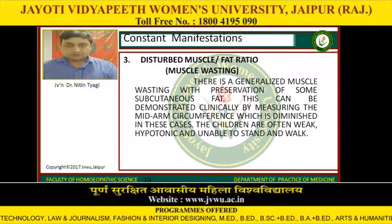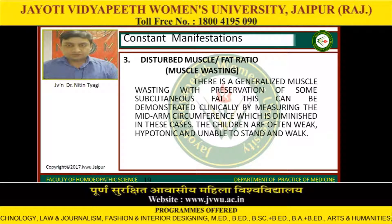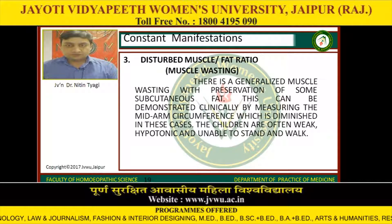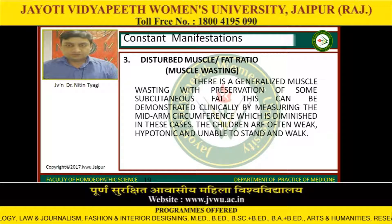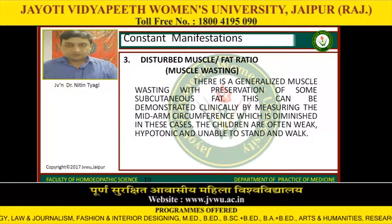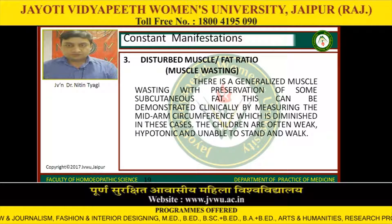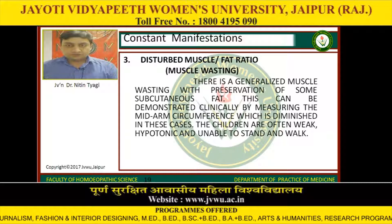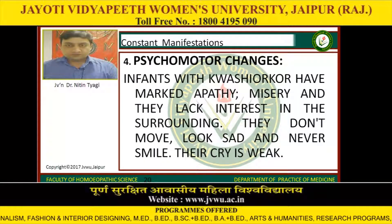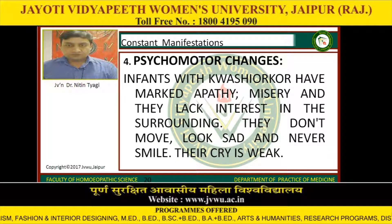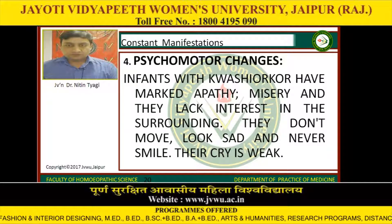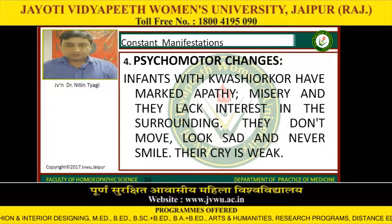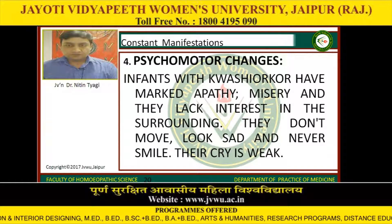The third constant manifestation is disturbed muscle-fat ratio, or muscle wasting. There is generalized muscle wasting with preservation of some subcutaneous fat, which can be demonstrated clinically by measuring the mid-arm circumference, which is diminished in these cases. The children are often weak, hypotonic and unable to stand and walk. The fourth is psychomotor changes. Infants with kwashiorkor have marked apathy, misery and they lack interest in their surroundings. They don't move, they look sad and never smile. Their cry is weak.